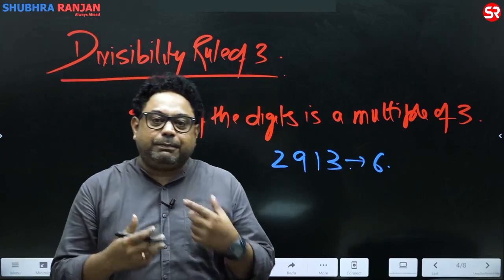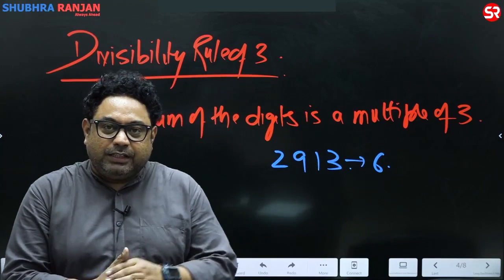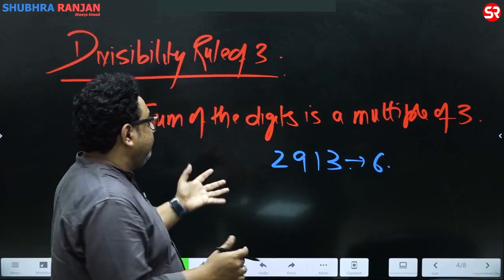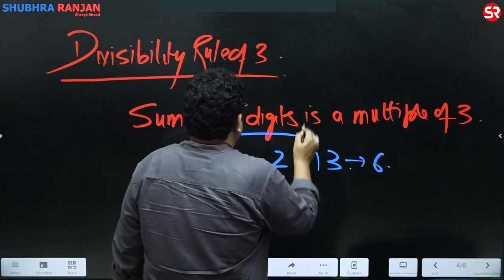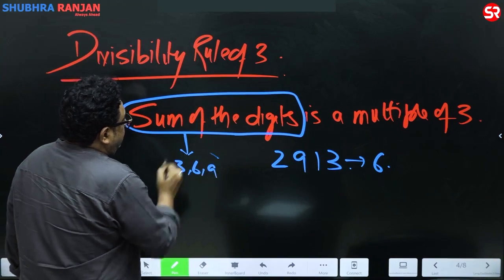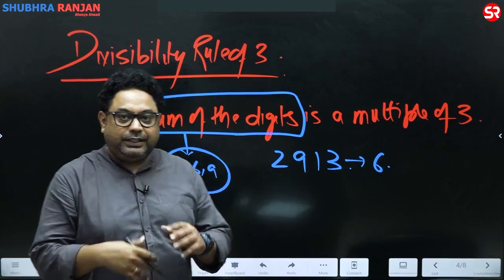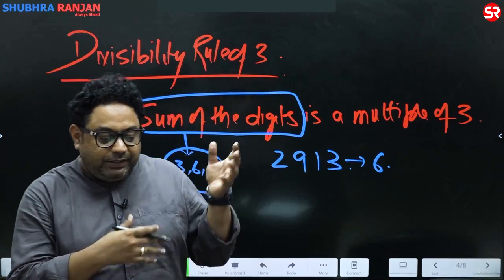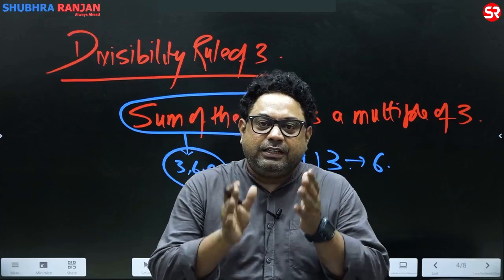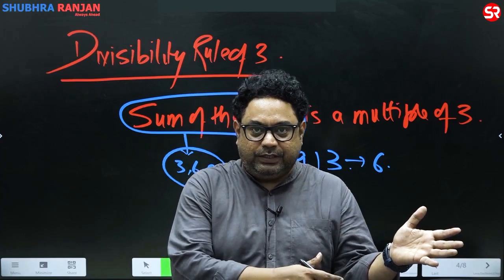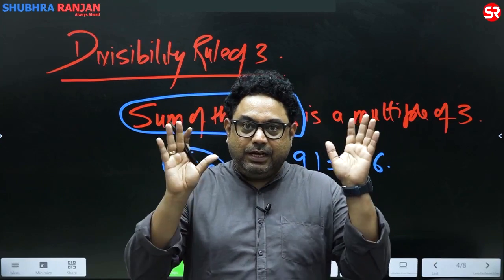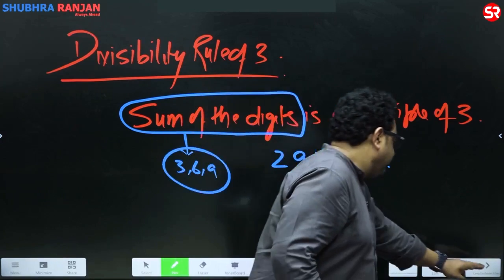One more rule — fifteen: reduce it to a single digit number: one plus five is six. If the single digit number is a multiple of three, the whole number is a multiple of three. So if the sum of digits comes out to be three, six, or nine, the number is exactly divisible by three; otherwise it gives you a remainder.